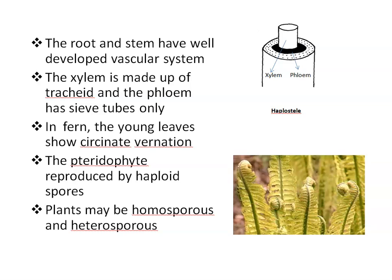They may be dorsiventral or radial in symmetry with branched stems. In ferns, the young leaves show circinate vernation, where the tips are curved inward. Primary embryonic roots in Pteridophytes are short-lived and replaced by adventitious roots.